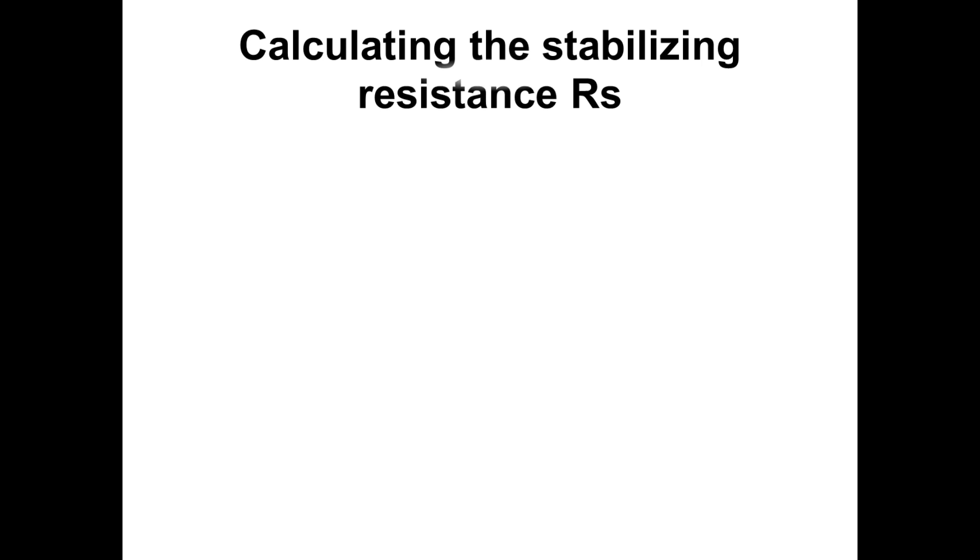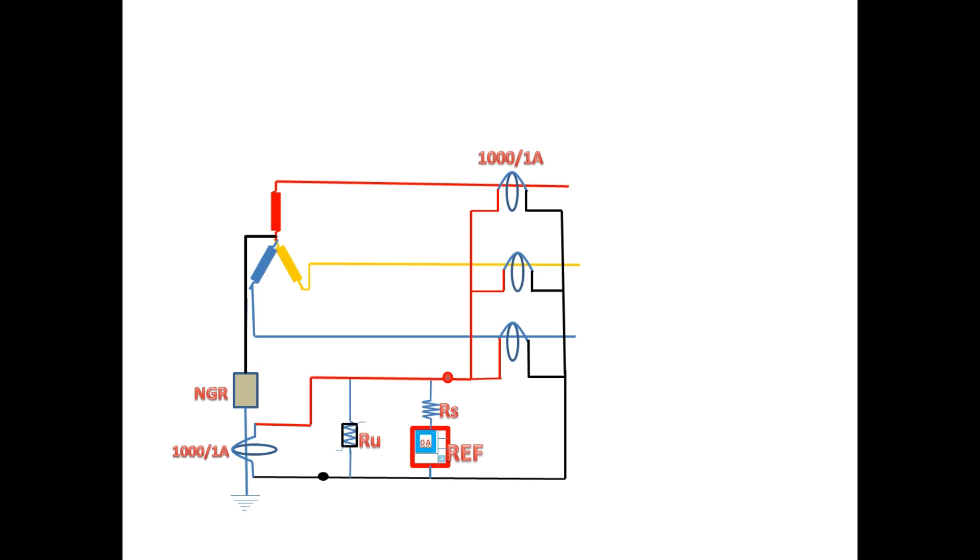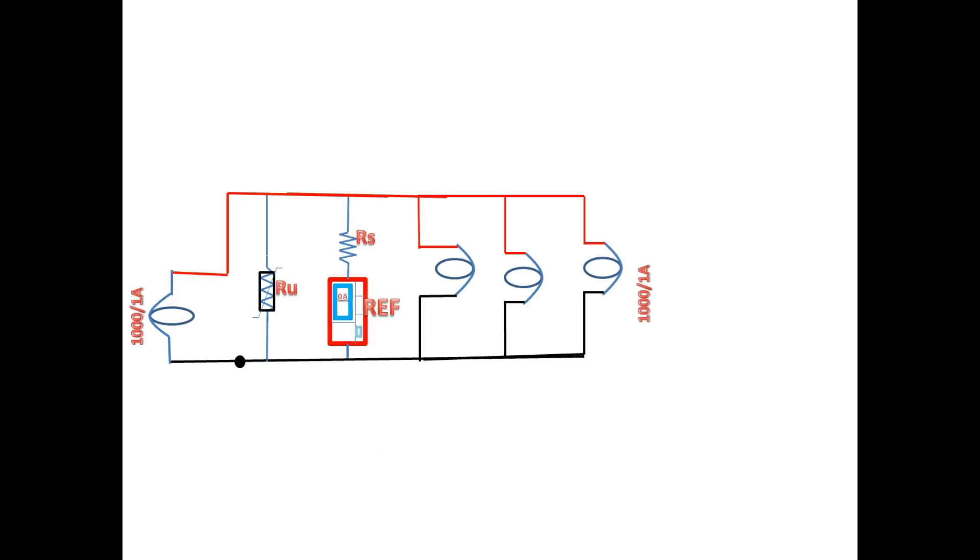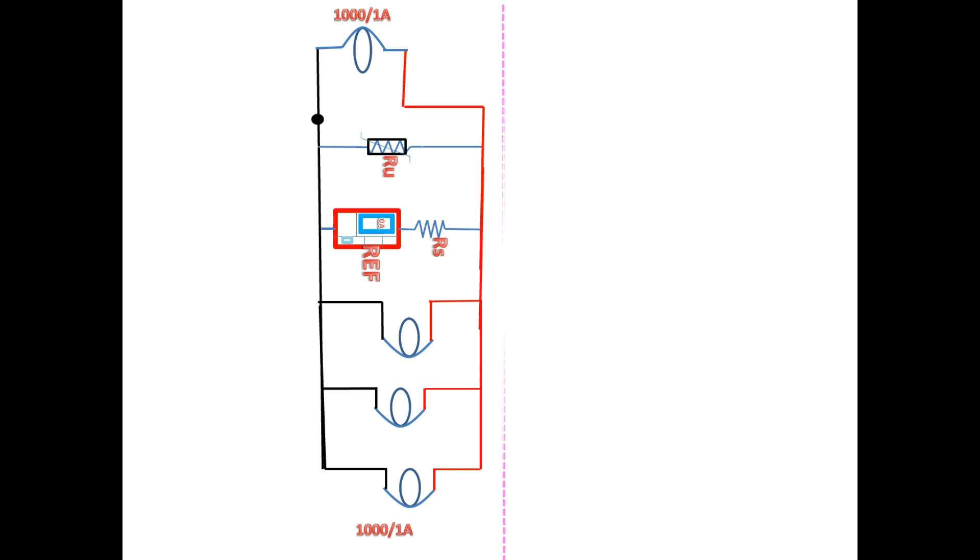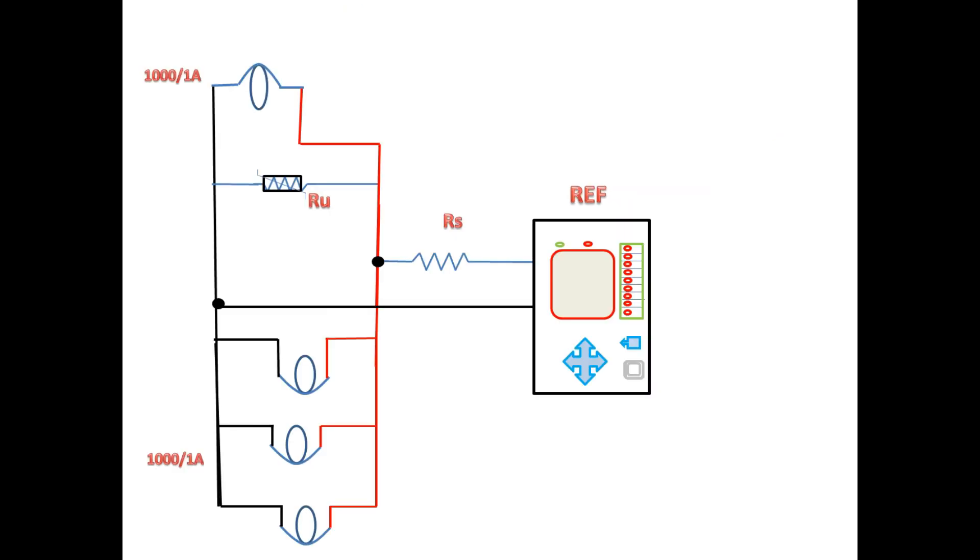First we will see how to find the resistor value. Now, we go for calculating the stabilizing resistor RS. Formula for RS is VS by ISET. Before going into calculation, first we will simplify the circuit so it will be easy for calculation. I am going to take only CT alone with resistor and relay from this circuit. This is the parallel circuit. After simplifying this, both are equivalent circuit. In this circuit, VS is the voltage across this point.